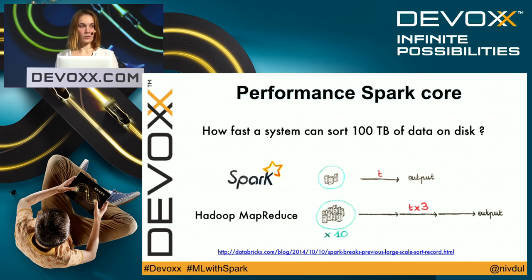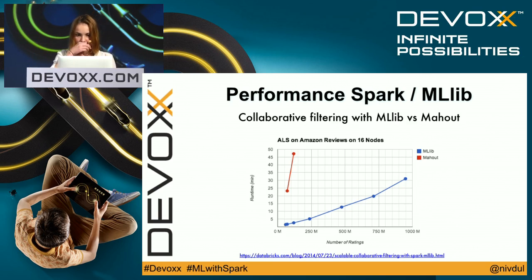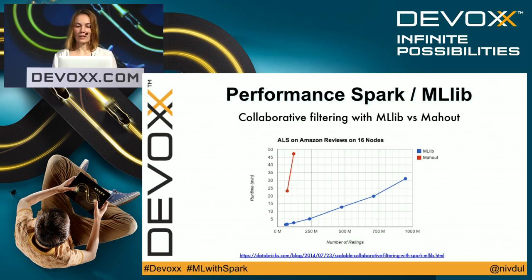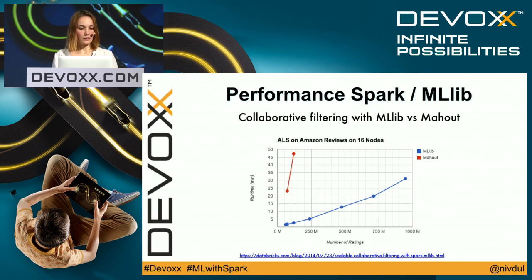If you want more details about this, there is a link with the source. And for performance of Spark with MLlib versus Mahout: as you can see in the diagram, Spark with MLlib is scalable and faster than Mahout.